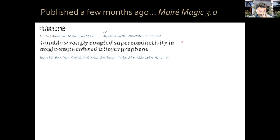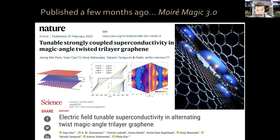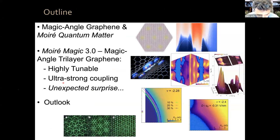A few months ago, both the group of Philip Kim in Science and our group in Nature published in the same week the discovery of a new next-generation moiré quantum matter — I call this Moiré Magic 3.0. It was the discovery of superconductivity in magic angle twisted trilayer graphene. It's a very highly tunable system, and I think it's actually even more interesting than its bilayer counterpart. This is what I want to be telling you about today.